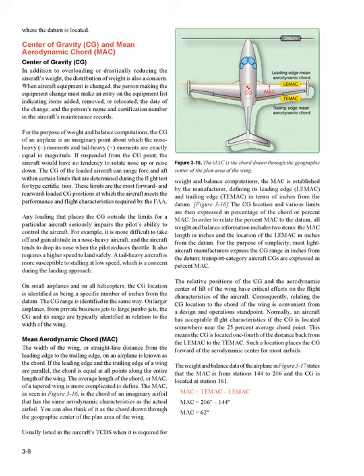On larger airplanes — from private business jets to large jumbo jets — the CG and its range are typically identified in relation to the width of the wing. Mean Aerodynamic Cord (MAC): The width of the wing, or the straight-line distance from the leading edge to the trailing edge, is known as the cord. If the leading and trailing edges of a wing are parallel, the cord is equal at all points along the entire length of the wing. The MAC of a tapered wing is more complicated to define. As seen in figure 3-16, the MAC is the cord of an imaginary airfoil that has the same aerodynamic characteristics as the actual airfoil. You can also think of it as the cord drawn through the geographic center of the plan area of the wing. Usually listed in the aircraft's TCDS, the MAC is established by the manufacturer, defining its leading edge (LEMAC) and trailing edge (TEMAC) in terms of inches from the datum.